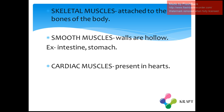Skeletal tissues are attached to the bones of the body. Smooth tissues, as the name suggests, are very smooth and the walls of smooth tissues are hollow — examples include the intestine and stomach. Cardiac muscles are present in places like the heart.